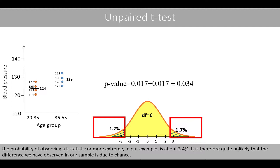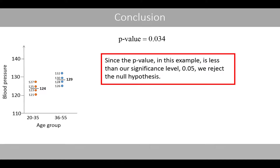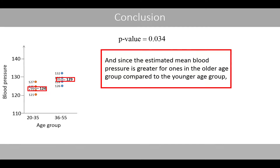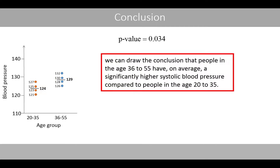It is therefore quite unlikely that the difference we have observed in our sample is due to chance. Since the p-value of 0.034 is less than our significance level of 0.05, we reject the null hypothesis. And since the estimated mean blood pressure is greater for the ones in the older age group compared to the younger age group, we can conclude that people in the age 36 to 55 have, on average, a significantly higher systolic blood pressure compared to people in the age 20 to 35.